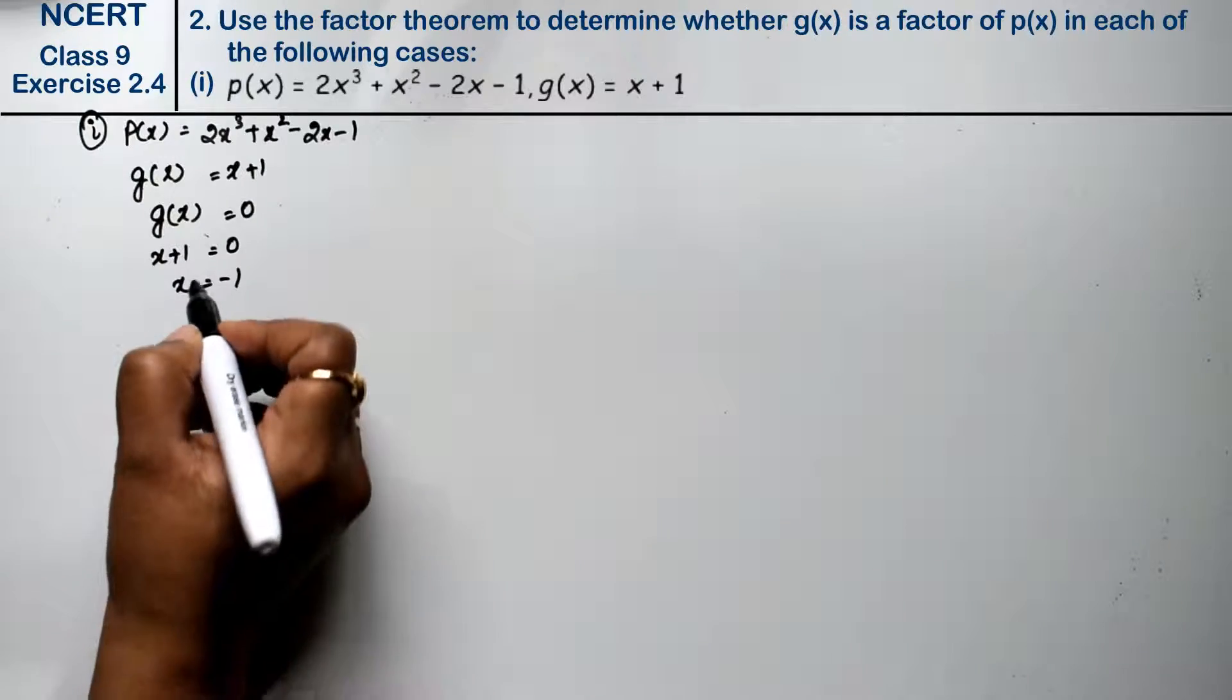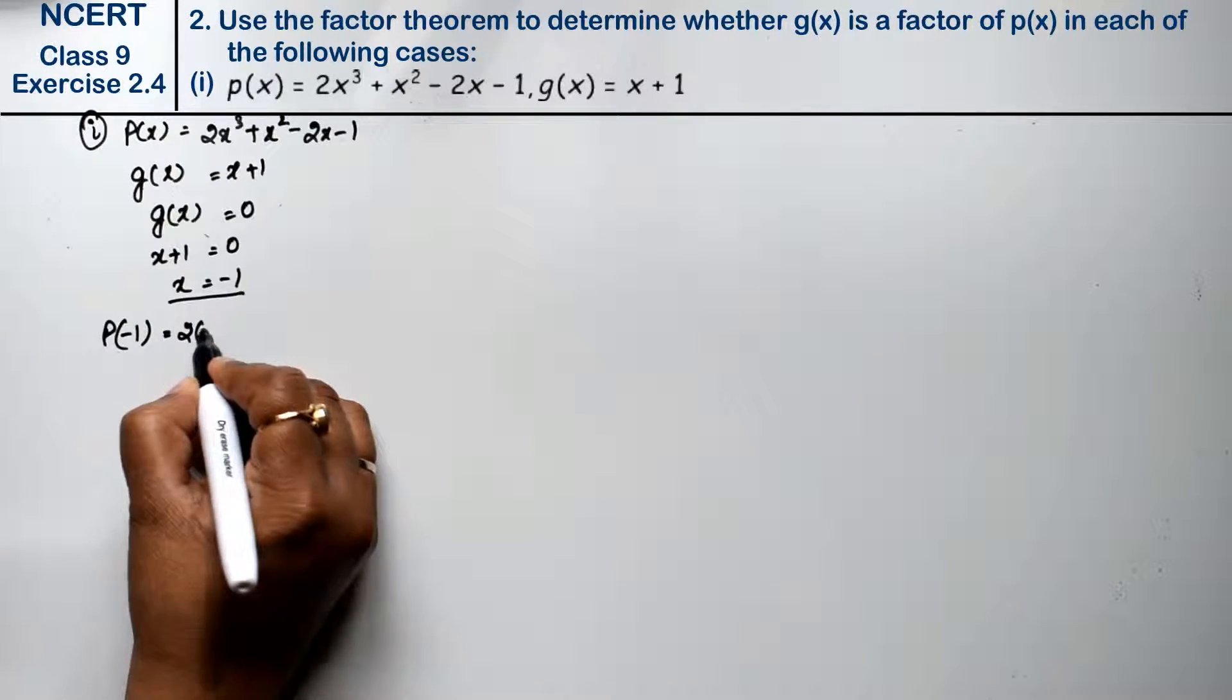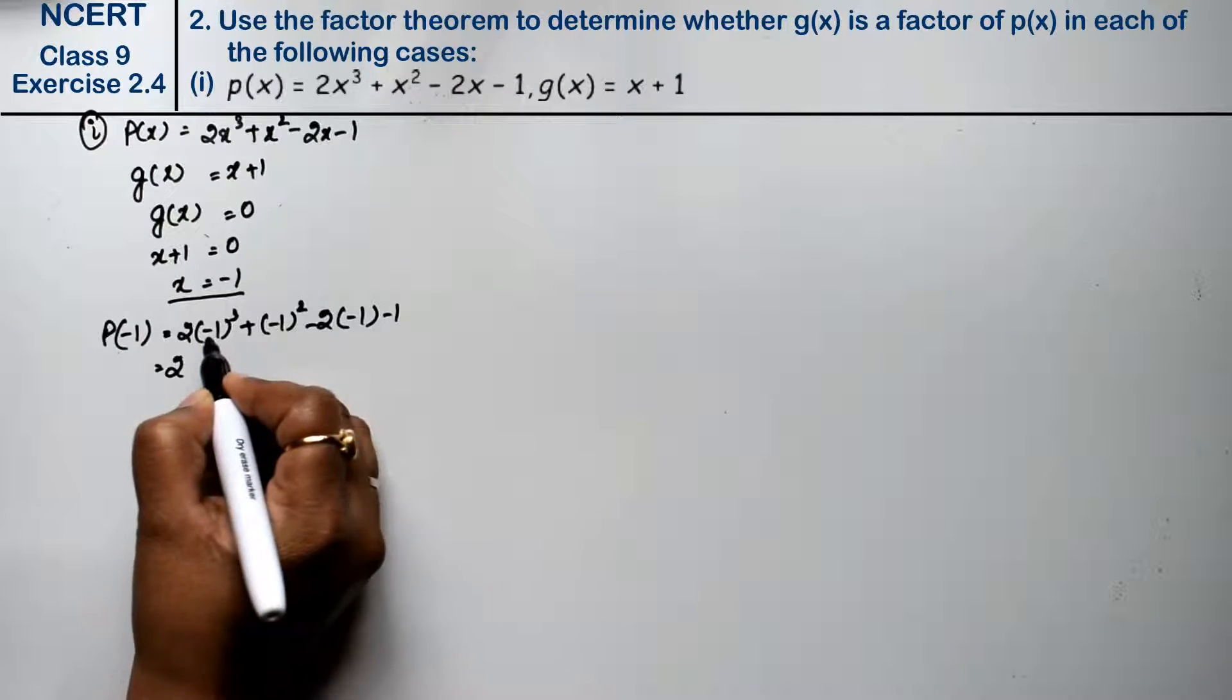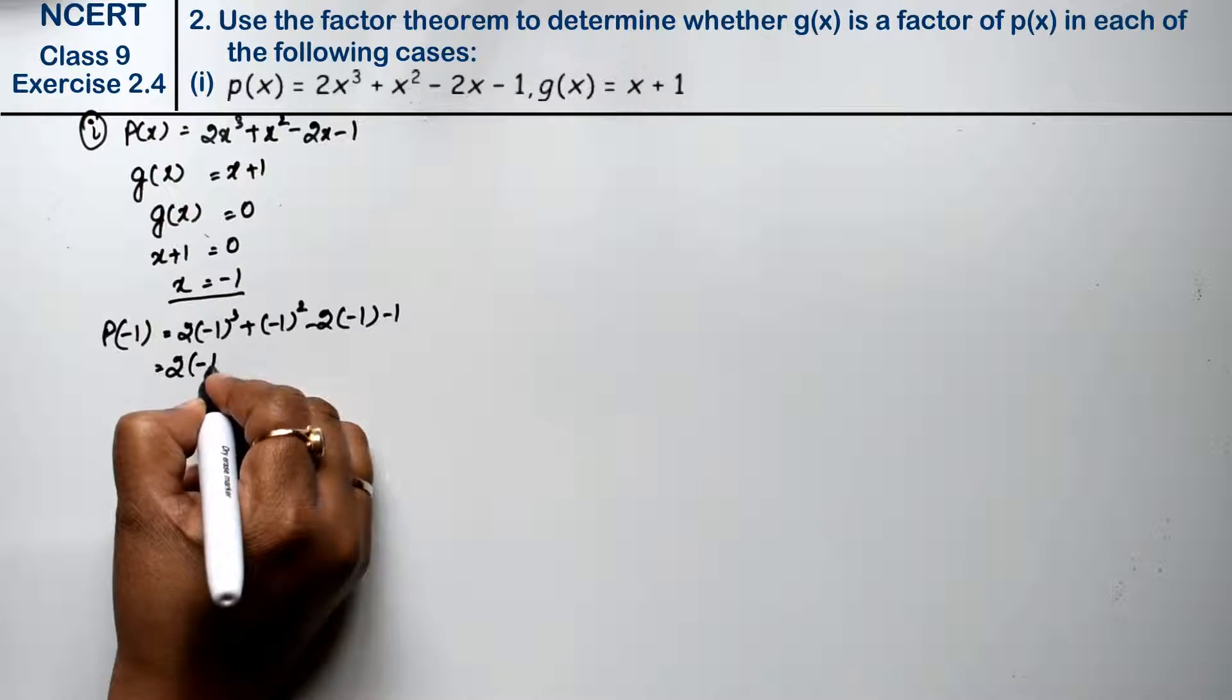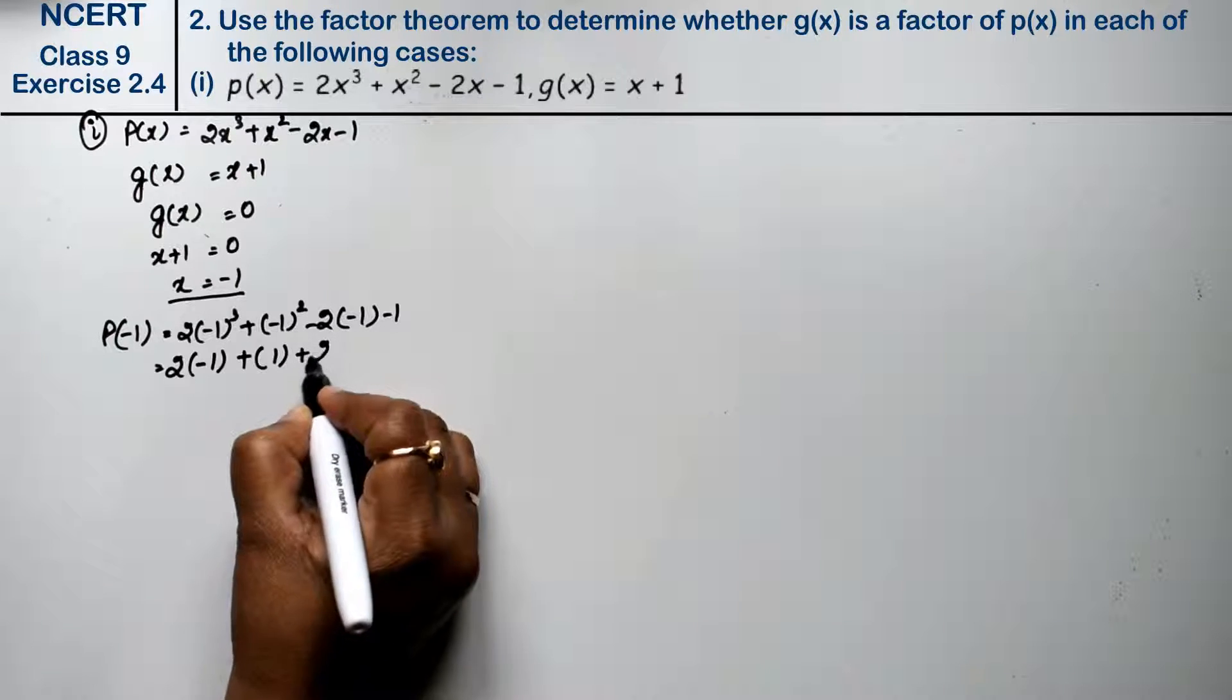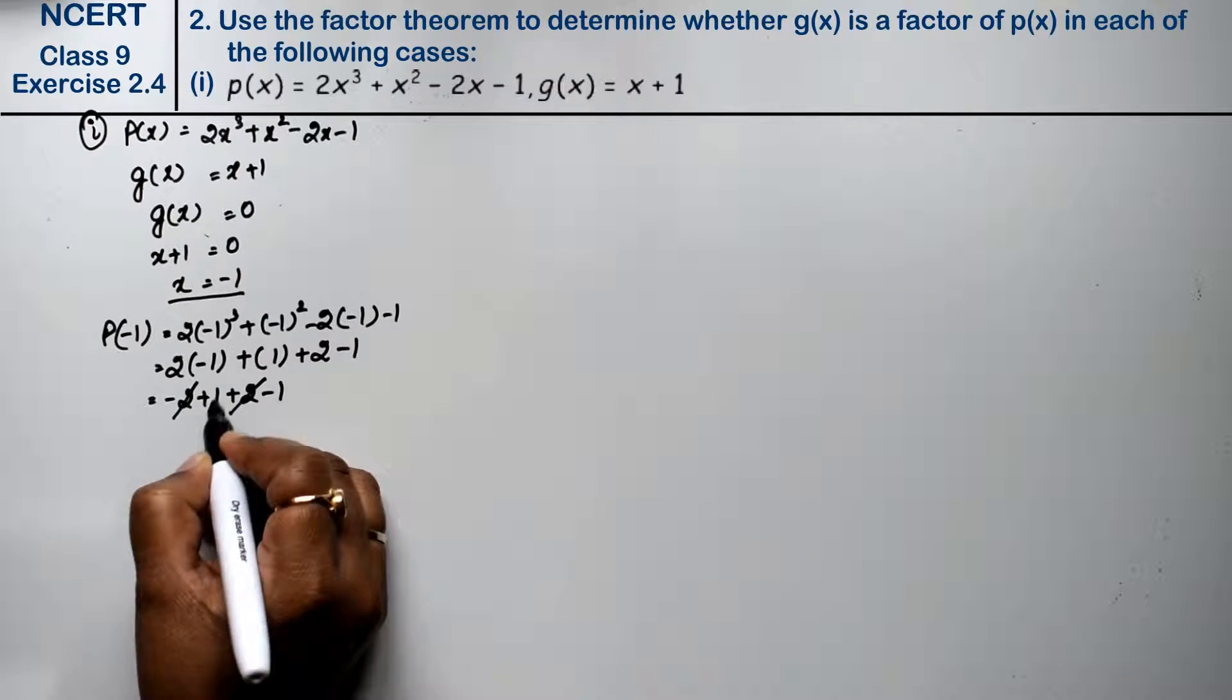So we have x value -1. So see: 2 × (-1)³ + (-1)² - 2 × (-1) - 1. Minus 1 cubed, power is odd, so the value will be negative. Plus: power is even, so we keep this value positive. Minus times minus is plus. So: -2 + 1 + 2 - 1. Now the value is -2 + 2 + 1 - 1.